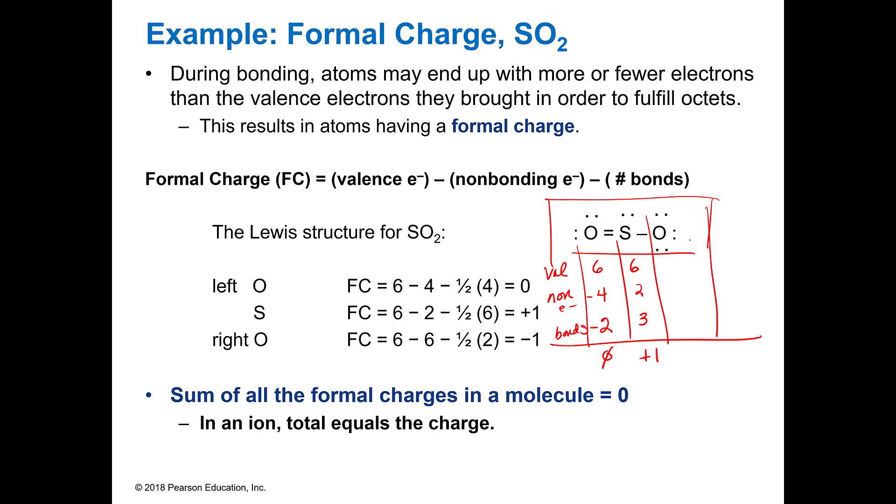And then you look at the final oxygen. It has six valence. It has one, two, three, four, five, six non-bonding and it has one bond. So it's a minus one. So notice zero plus one minus one, that all equals zero, which is what it should equal. And that is how we calculate the formal charges of this. If it had been an ion, this should have been equal to whatever the charge was on the ion.